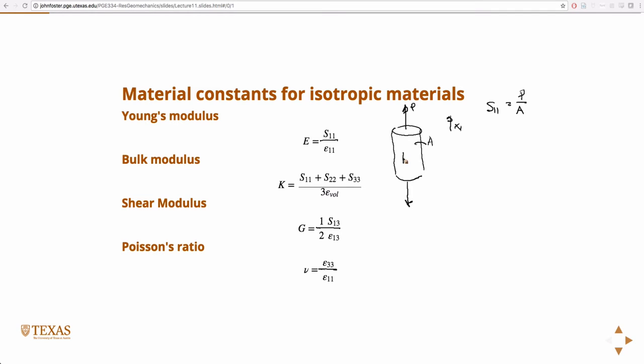And I can put a little strain gauge on my sample and I can measure the strain. So then s11 over e11, which is also the slope of the stress-strain curve in 1D, that's Young's modulus. This is also called just the elastic modulus.